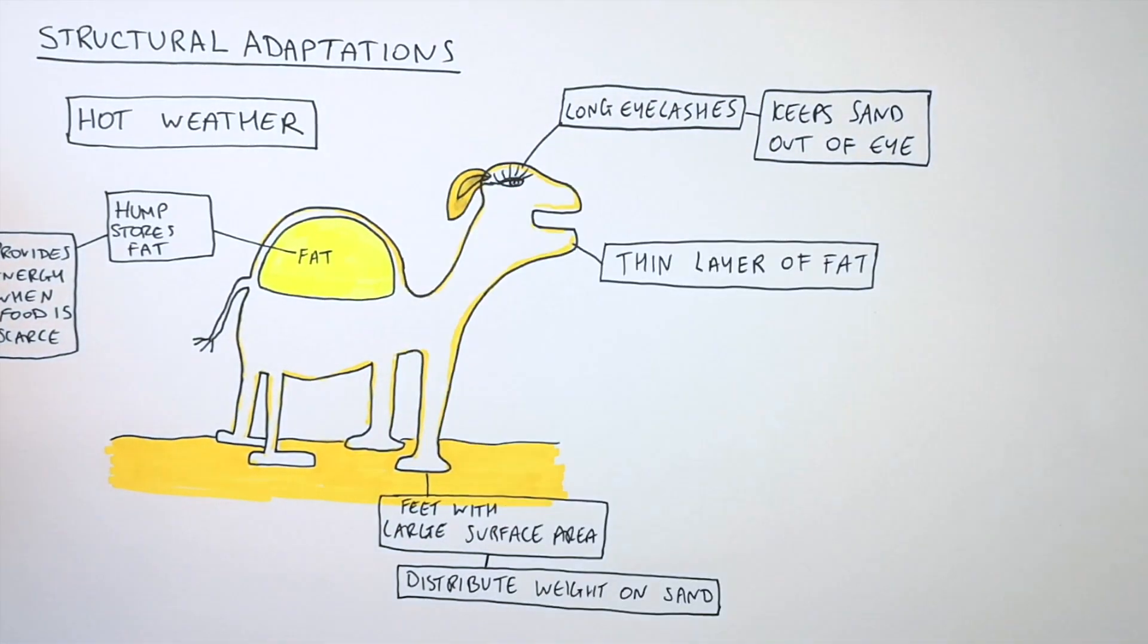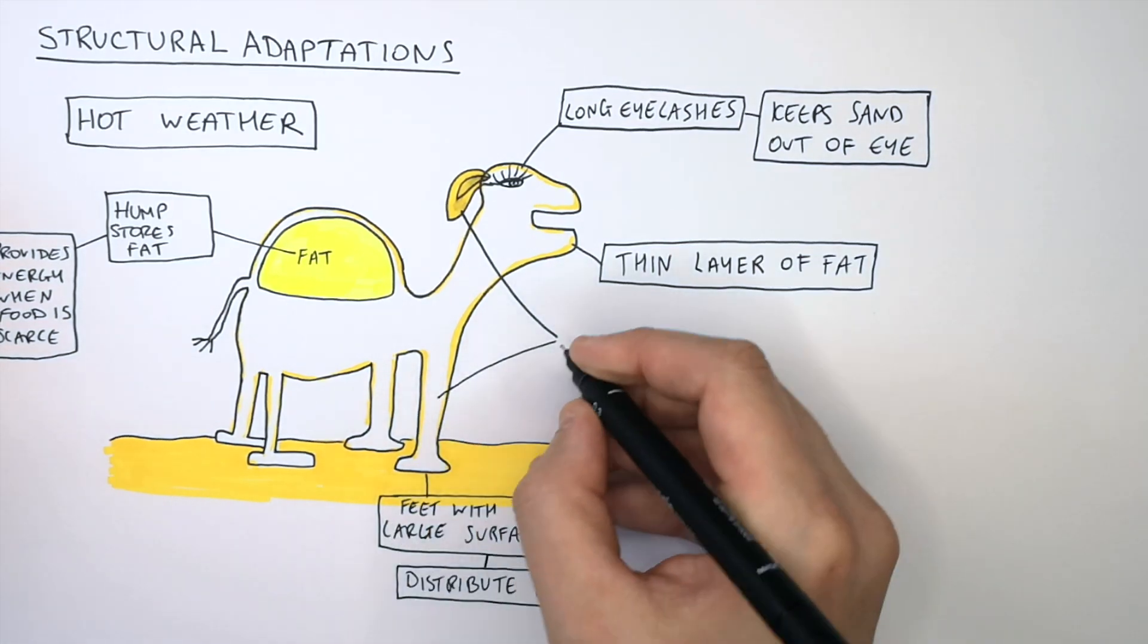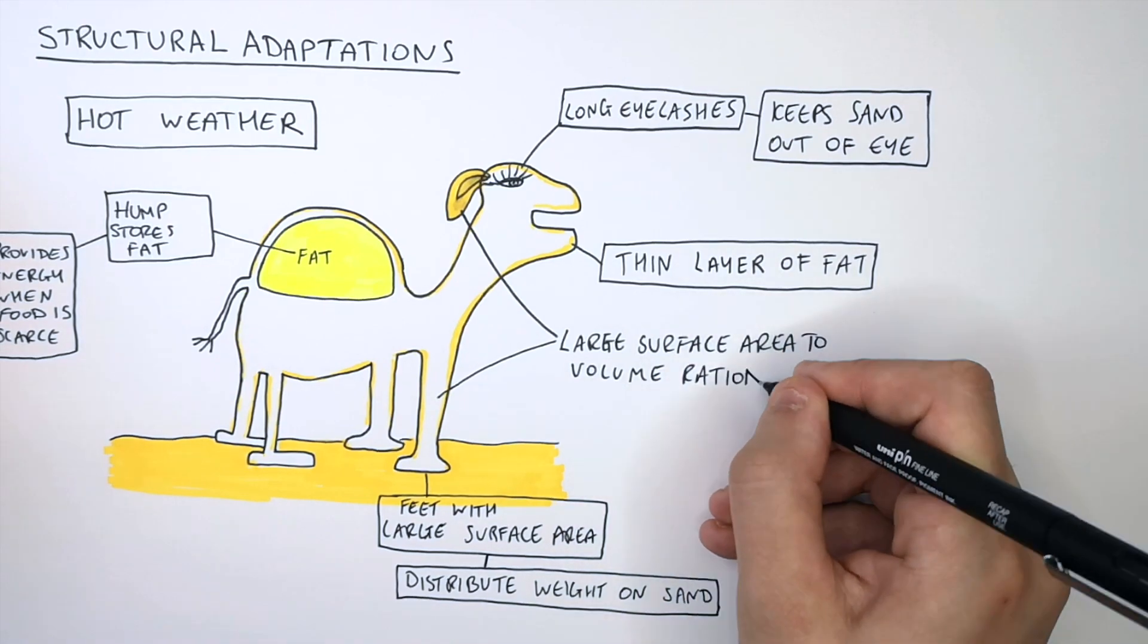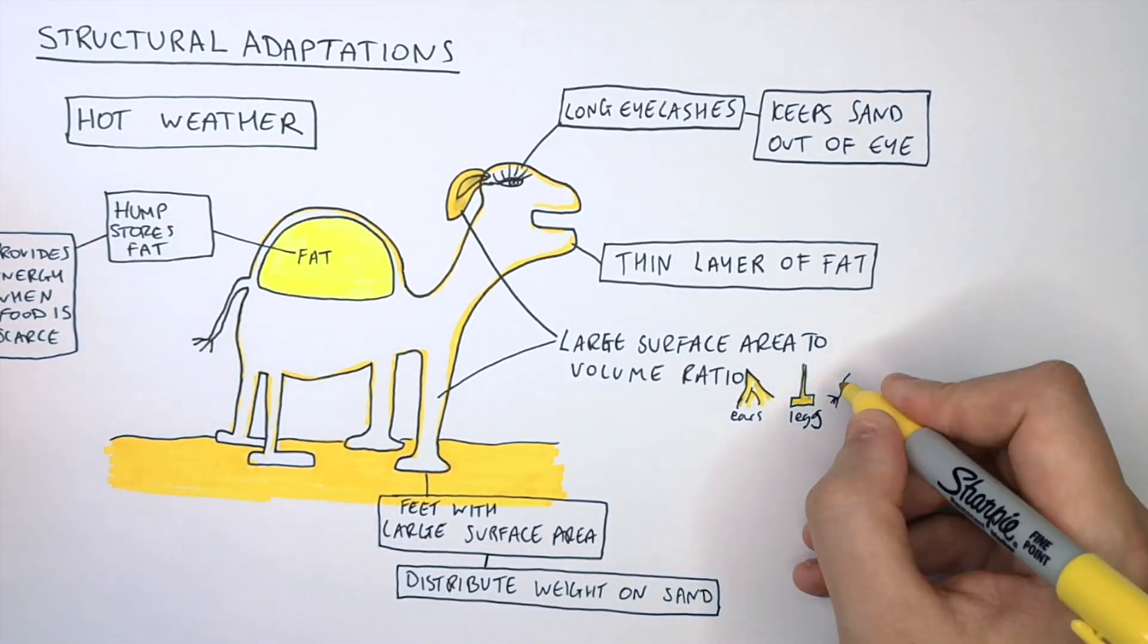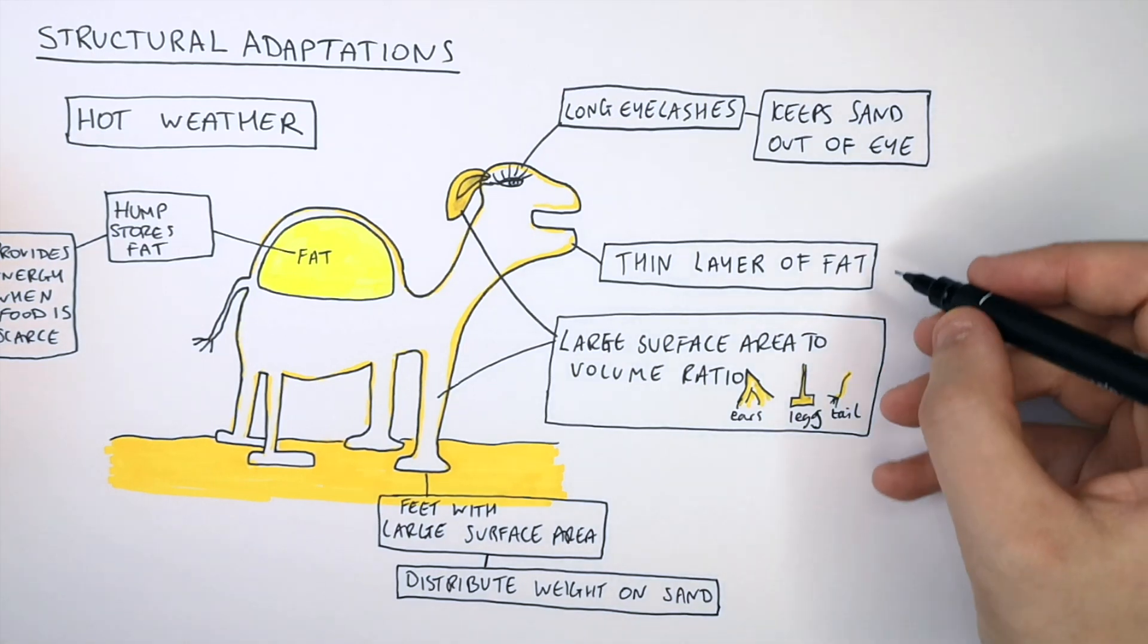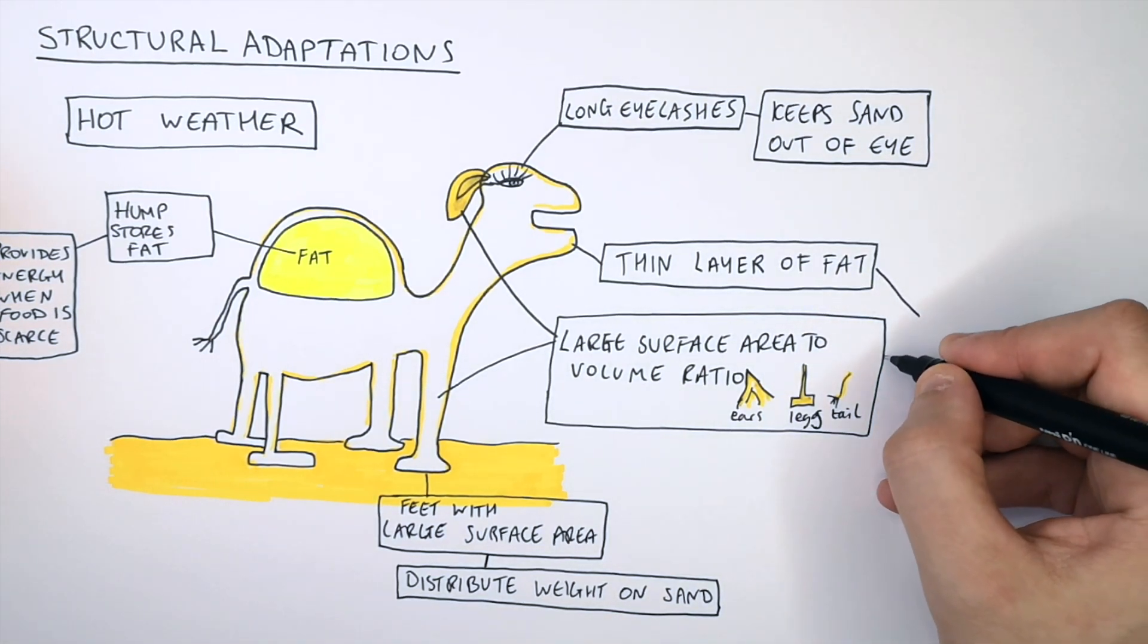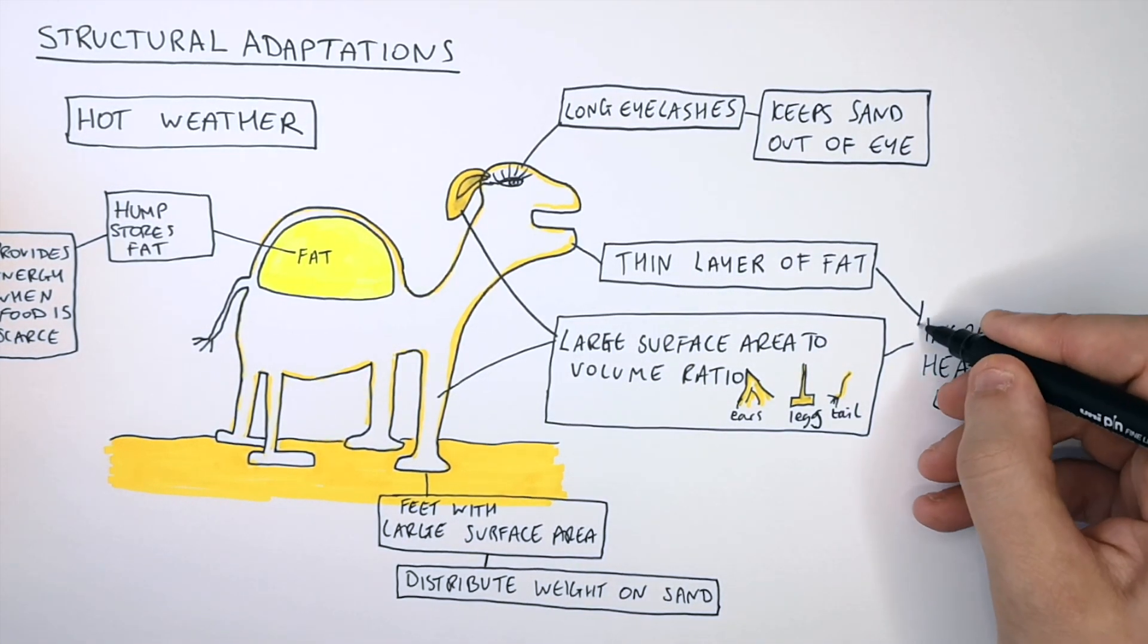Camels have long ears. They also have long thin legs and a long tail. This is to increase their surface area to volume ratio. The higher an animal's surface area to volume ratio is, the more heat can be lost. This increases heat loss, preventing the animal from overheating.